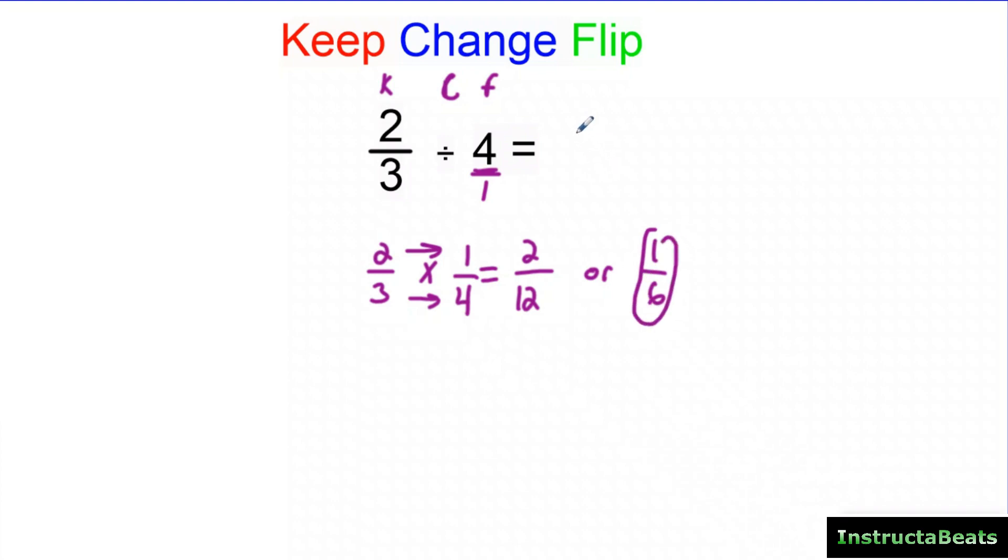So two thirds divided by four is one sixth. Or if we go back to what we were talking about in our area model lessons, if we took two thirds and divided it into four groups, there would be one sixth in each group. Let's take a look at another example.